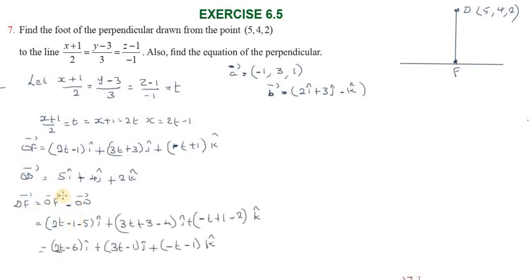Computing DF: the î component is (2t−1) − 5 = 2t − 6; the ĵ component is (3t+3) − 4 = 3t − 1; the k̂ component is (−t+1) − 2 = −t − 1. So DF = (2t−6)î + (3t−1)ĵ + (−t−1)k̂.